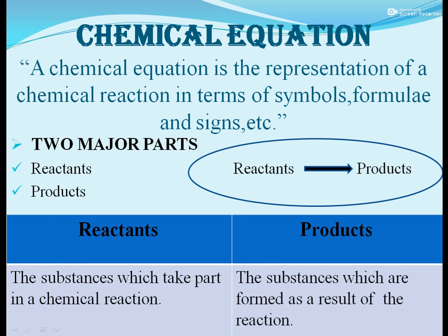A chemical equation is the representation of a chemical reaction in terms of symbols, formulae and signs. Symbols are the shorthand notation for an element. Instead of writing hydrogen, we use its symbol H. For uranium, we use U. For chlorine, we simply write Cl.